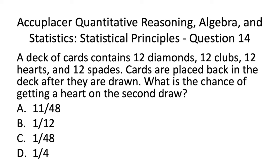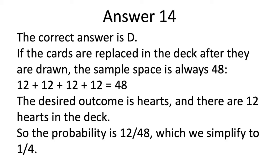Moving on to Acuplacer QAS Statistics Practice Test Question 14. The correct answer is D. If the cards are replaced in the deck after they are drawn, the sample space is always 48. We had 12 of each of the 4 kinds of cards for a total of 48. The desired outcome is hearts, and there are 12 hearts in the deck, so the probability is 12 over 48, which we simplify to 1 over 4.